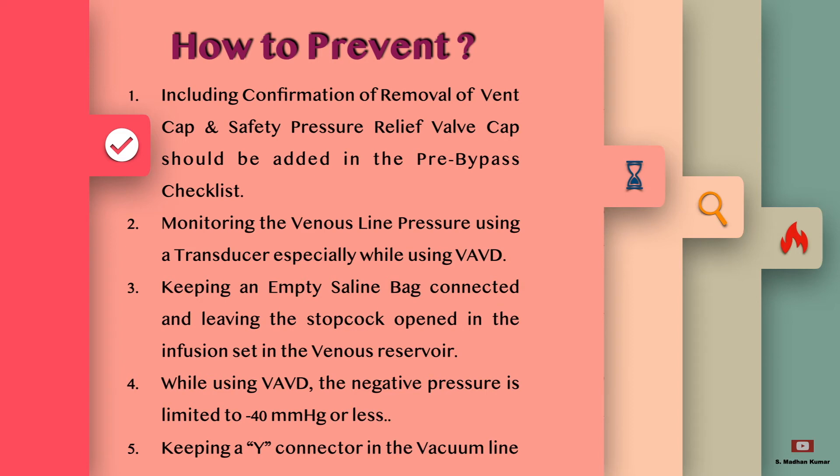Always keep a Y-connector in the vacuum line with a safety clamp present on it. If positive pressure develops inside the venous reservoir, we can always release the pressure immediately by unclamping the safety clamp.